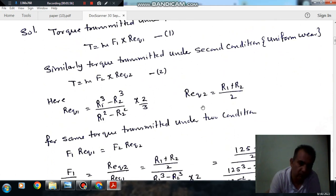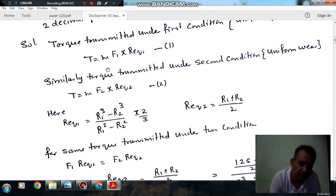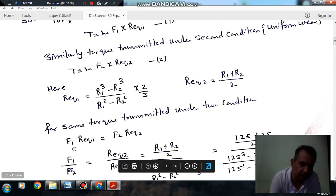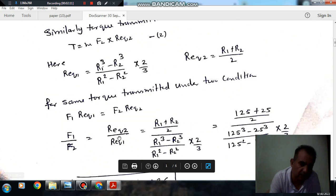The torque is the same and the coefficient of friction is the same for both conditions, so μ will cancel out. F1 by F2 will be R_eq2 by R_eq1, which is (R1 + R2)/2 divided by (R1³ - R2³)/(R1² - R2²) times 2.